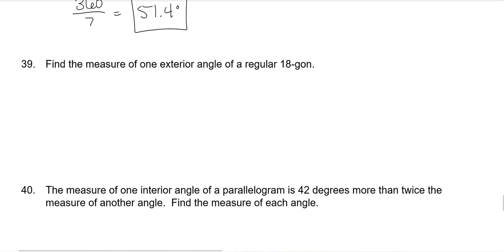Find the measure of one exterior angle of a regular 18-gon: 360 divided by 18 is 20 degrees.